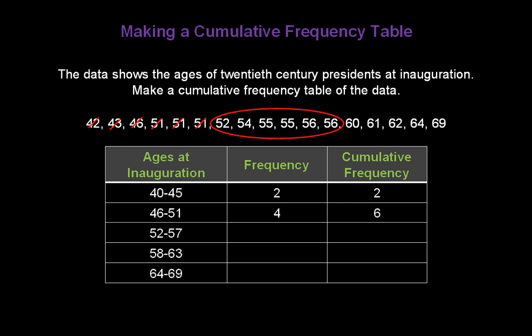How many presidents were inaugurated between age 52 and 57? Looks to me like there are 6 up there. We'll mark them off and figure out what our cumulative frequency is. 6 plus 6 is 12. So, so far we've accounted for 12 data items. How many presidents were inaugurated between 58 and 63 years of age? That would be 3. So, we take that 3 and we're going to add it to 12 to find out that our cumulative frequency now is 15.